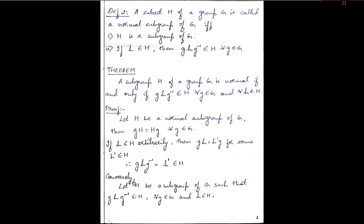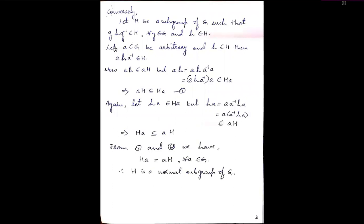Now we prove the converse. Conversely, let H be a subgroup of G such that gHg⁻¹ belongs to H for all g belonging to G and h belonging to H. We take an arbitrary element a belonging to G and h belonging to H. Since this condition holds, aHa⁻¹ also belongs to H. Now we need to prove H is a normal subgroup, meaning we need to show the left coset equals the right coset.